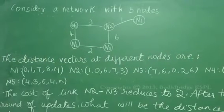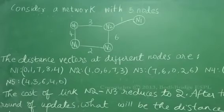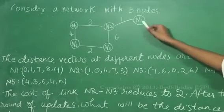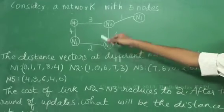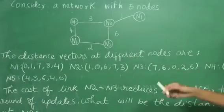The question is: consider a network with five nodes N1, N2, N3, N4, and N5.